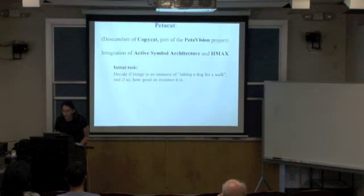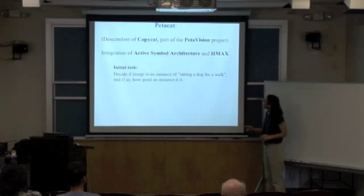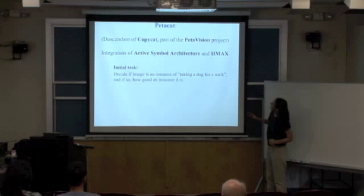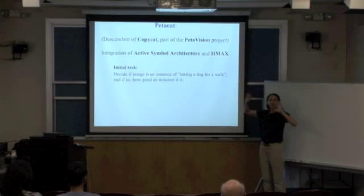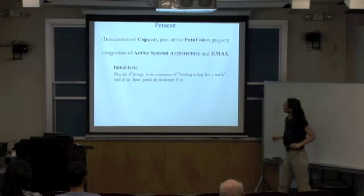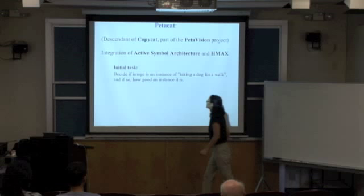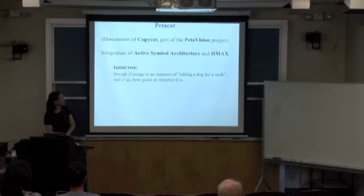That was a system I worked on for my PhD. Now I'm using ideas from it combined with the HMAX model to apply to image understanding. You can think of Copycat as understanding analogy in a very limited letter-string domain. The new system is called Petacat — a descendant of Copycat — part of a project called Petavision, which is trying to do petascale models of vision. Its task is to decide if an image is an instance of taking a dog for a walk, and if so, how good an instance it is.